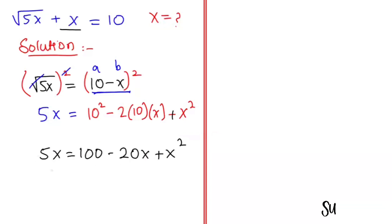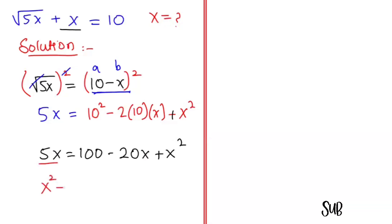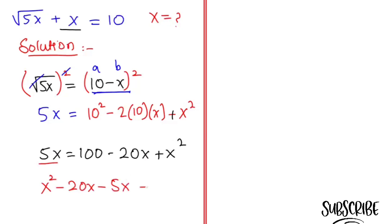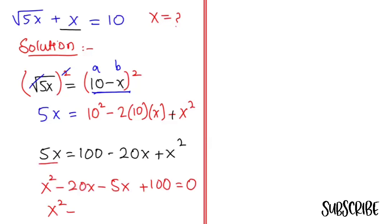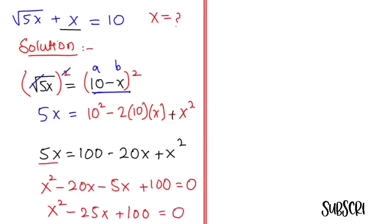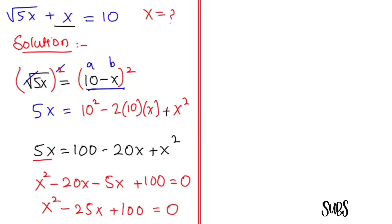Now I am going to take this 5x to the right hand side. So x² minus 20x minus 5x plus 100 equals 0, which gives us x² minus 25x plus 100 equals 0. Now we have the quadratic equation.